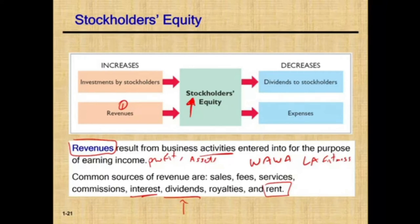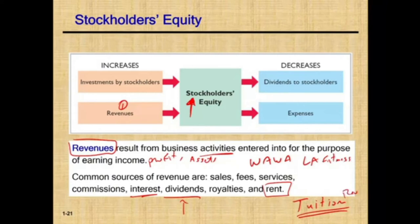Each company will have a different source of revenue, and you could have more than one. For example, the college you attend charges students tuition — tuition revenue. Different businesses will have different revenues. Revenue increases stockholders' equity.